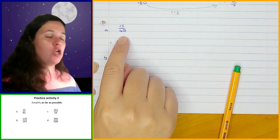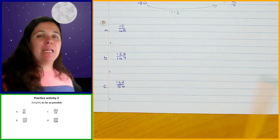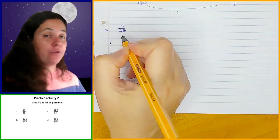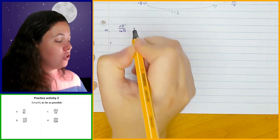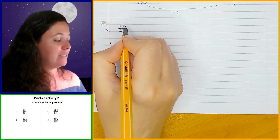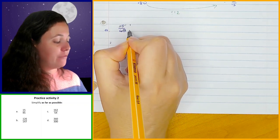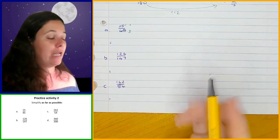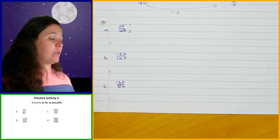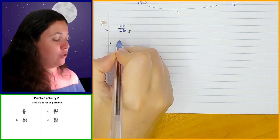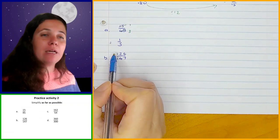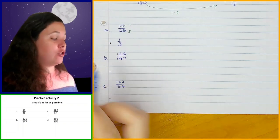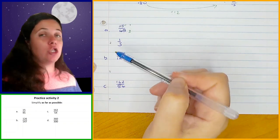The first one was 15 over 45. You may have been able to see straight away that 15 and 45 are both divisible by 15: 15 divided by 15 is 1 and 45 divided by 15 is 3, giving 1 over 3. Please be careful — when you end up with a 1 in the numerator you have to write that 1. You can't write this as 3 because a third is not the same as 3.